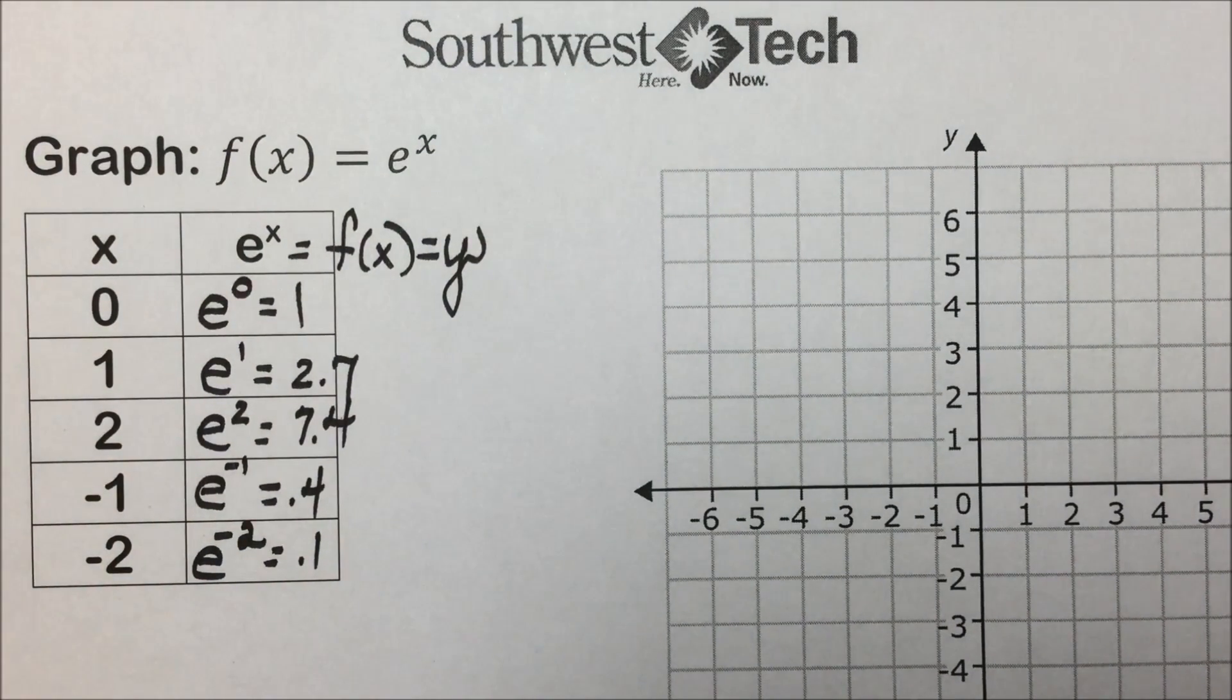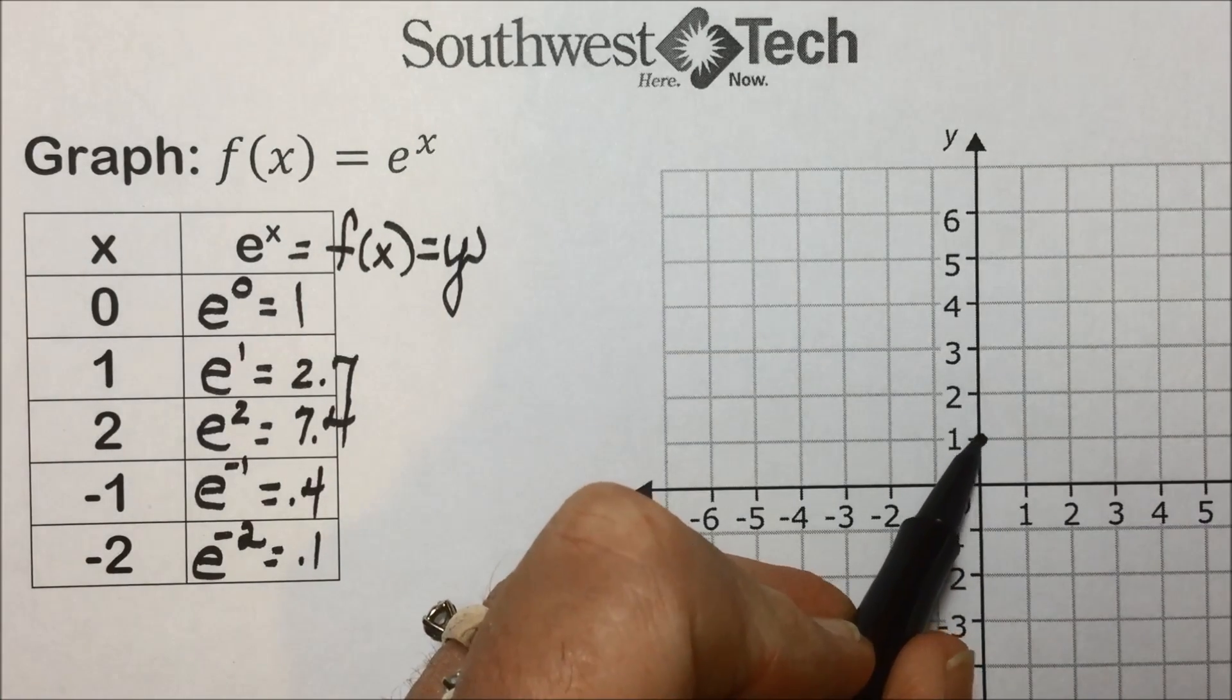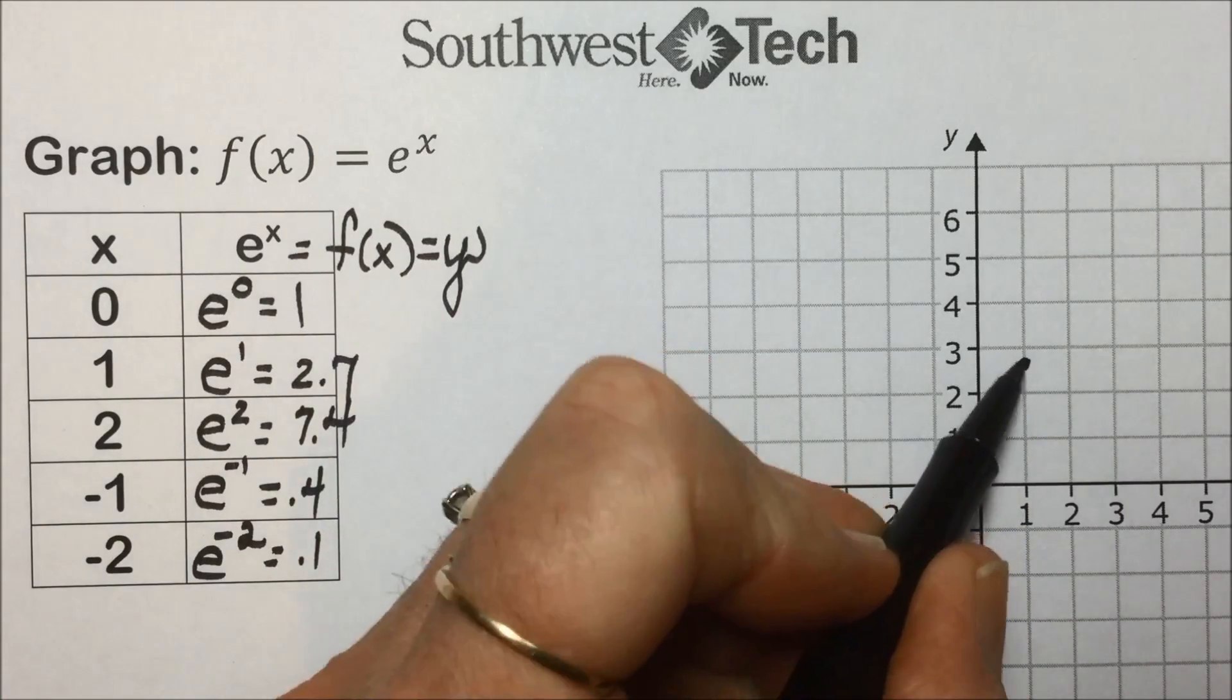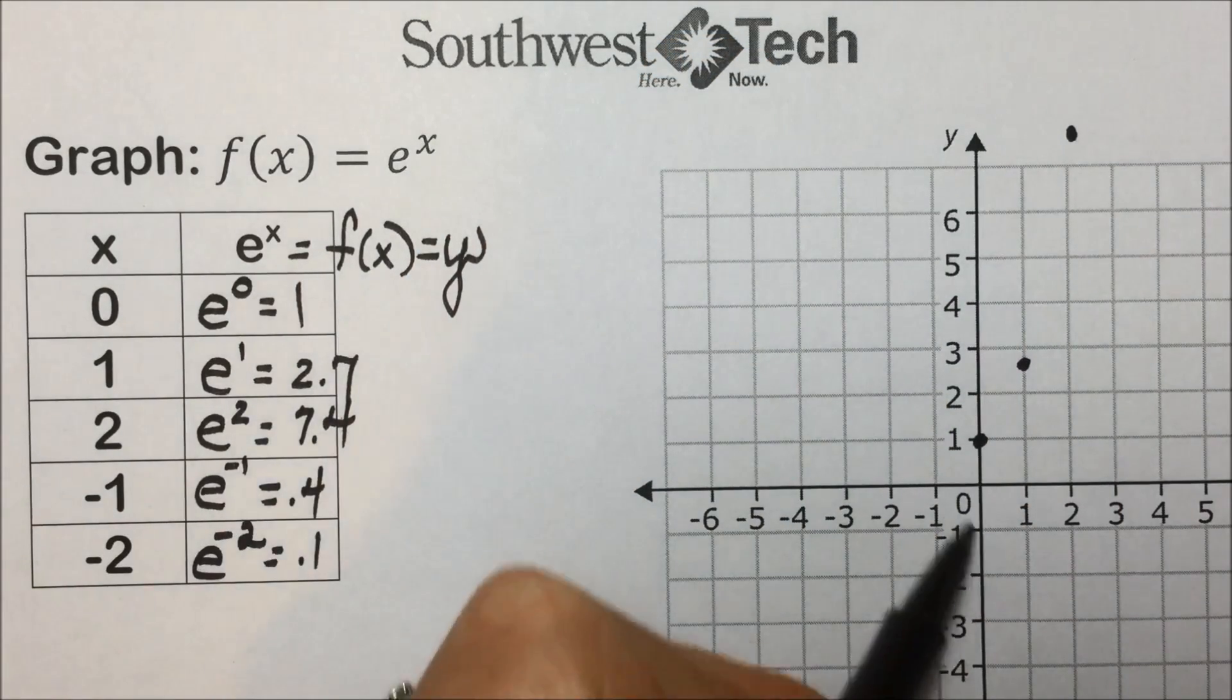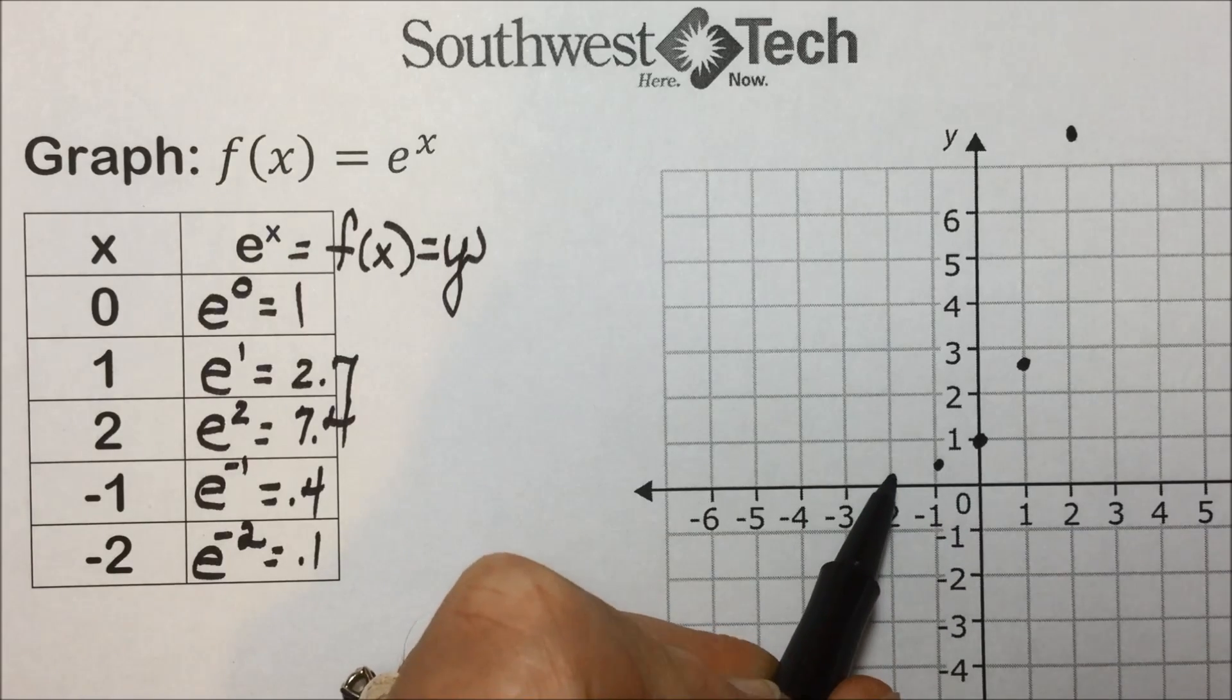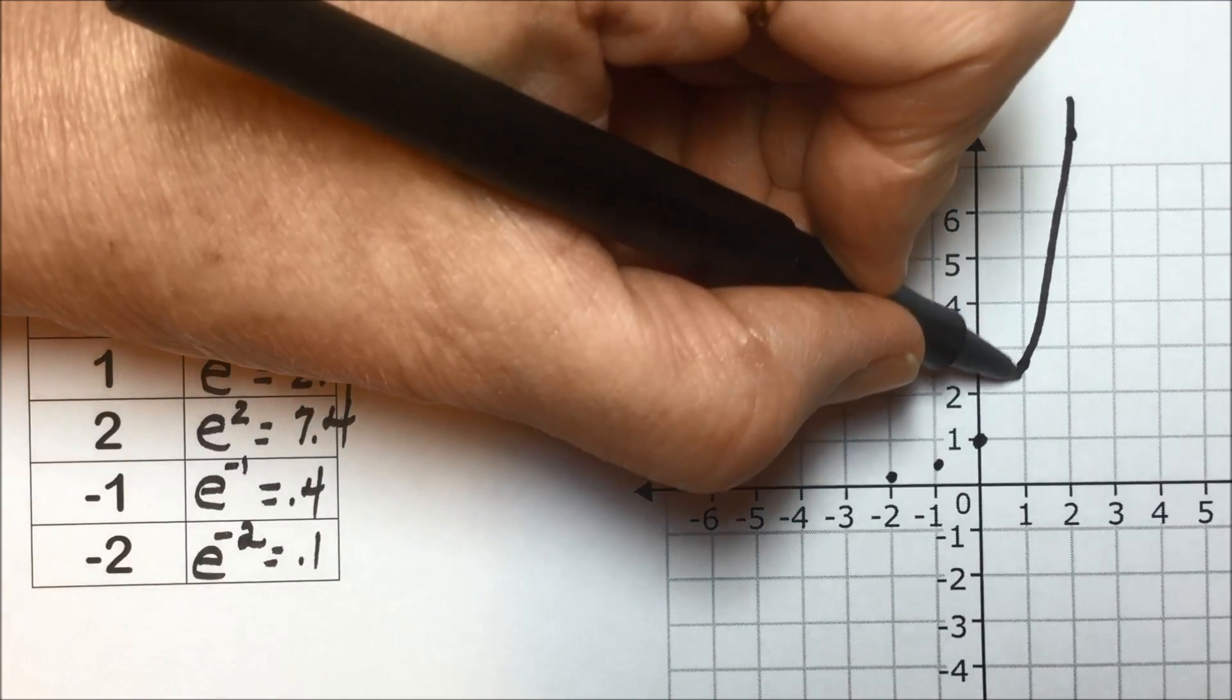So let's plot these points. We have the first one at 0, 1. It's our y-intercept. We had the ordered pair 1, 2.7. We had 2, 7.4, a little bit off the graph. Another ordered pair is negative 1, 0.4, negative 2, 0.1. And if we connect these with a smooth curve,